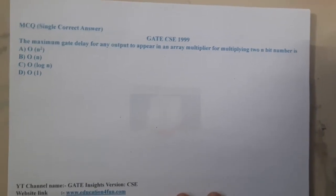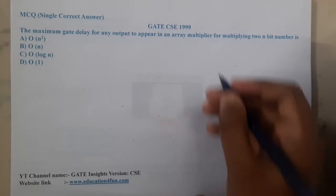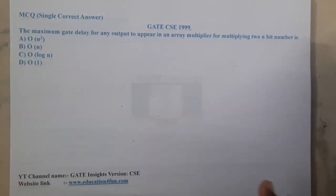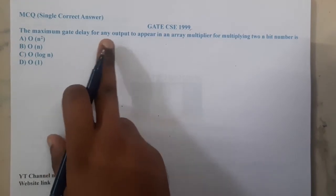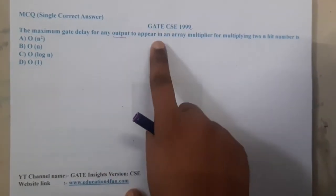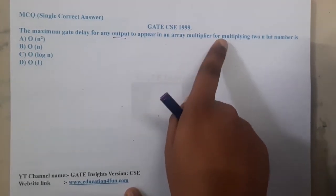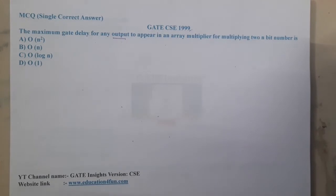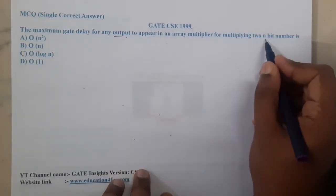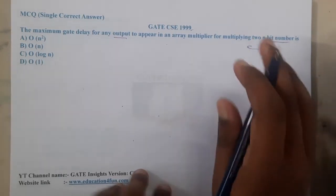Hello guys, we are back with our next lecture. This question belongs to GATE CSC 1999. The question is: what is the maximum gate delay for an output to appear in an array multiplier for multiplying two n-bit numbers? So the question is, if you are multiplying two n-bit numbers, what is the time complexity?